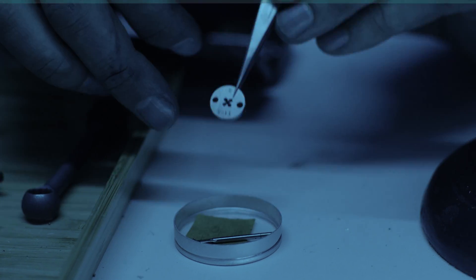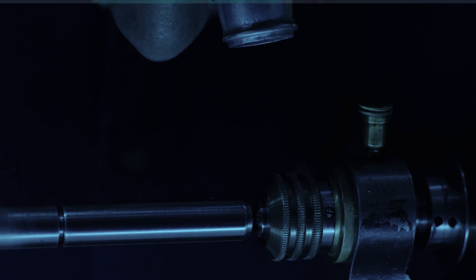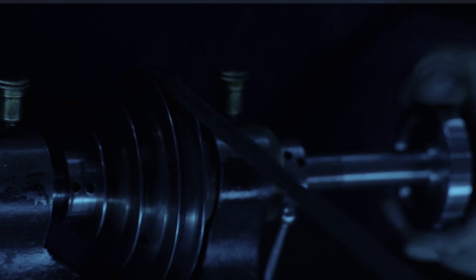Next the pillar is reversed end for end in the collet and the 1.4 millimeter die is mounted in the tailstock to cut the external thread. This is the thread that will fasten the pillar to the main plate of the watch.